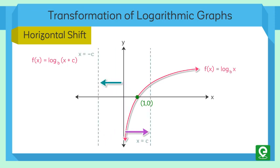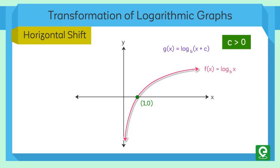When a constant c is added to the input of the parent function f(X) = log_b(X), the result is a horizontal shift c units in the opposite direction of the sign of c. When a constant c > 0 is added to the input, the graph is shifted left, and when c is subtracted, the graph is shifted right.